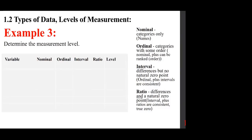Examples: hair color is clearly qualitative — nominal. Zip code is also nominal — it represents a category rather than a true numerical value. You can think of a zip code as a label for a neighborhood instead of giving the neighborhood's name. Letter grade is ordinal. ACT scores are interval.